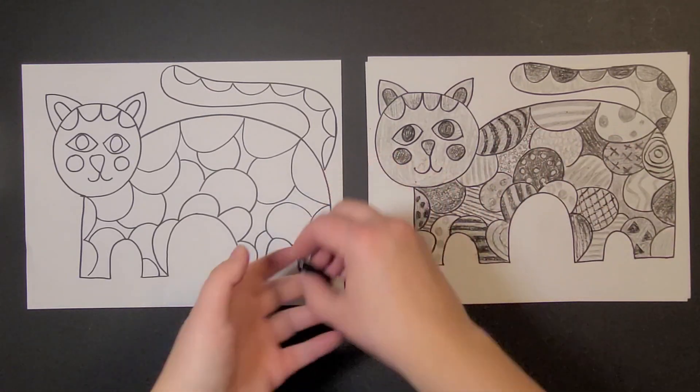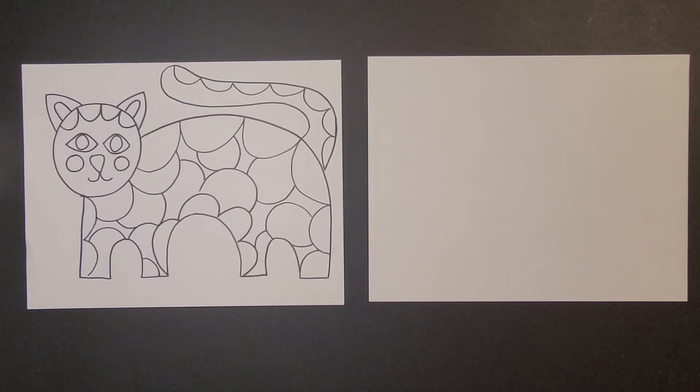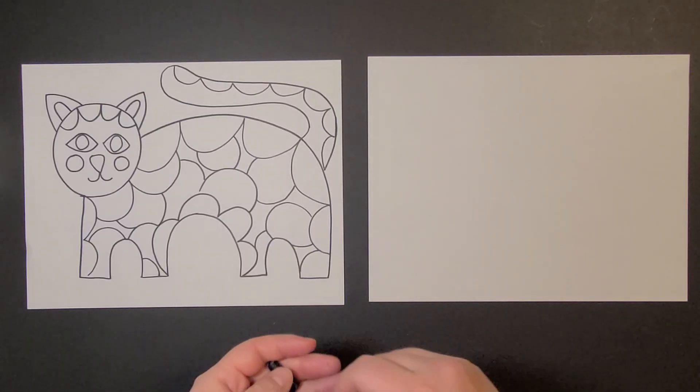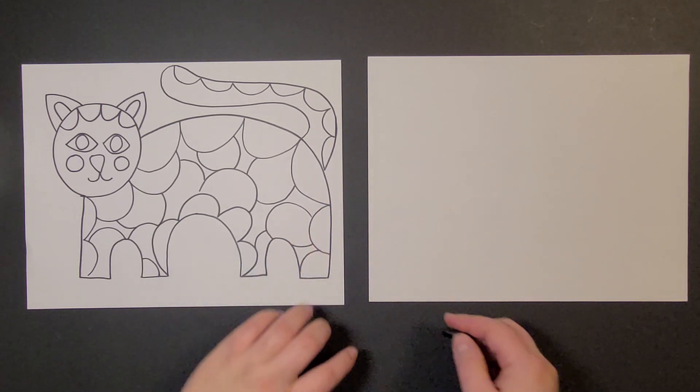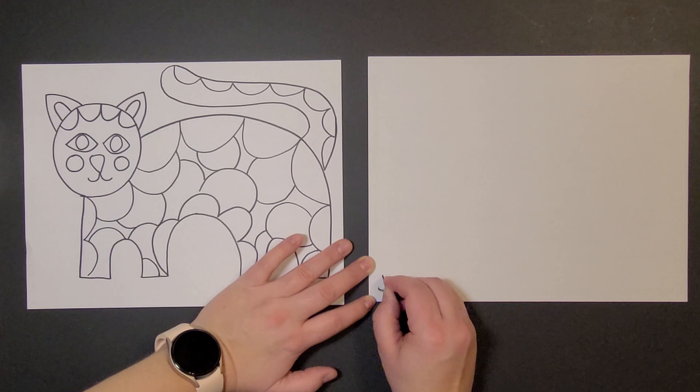So we're gonna get started. We're gonna need a clean piece of paper and a black crayon. Make sure you put your name on it. I'll do mine right here in the corner.